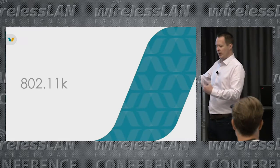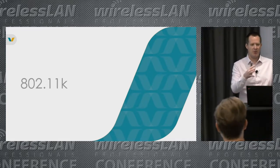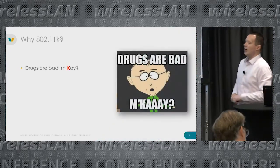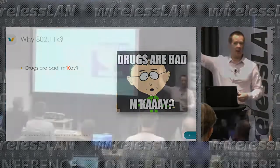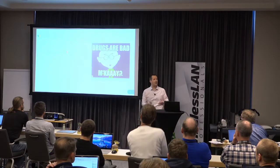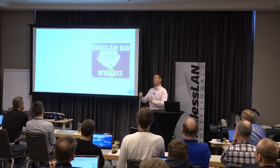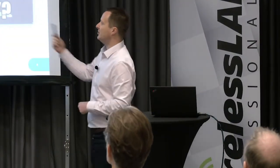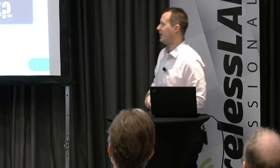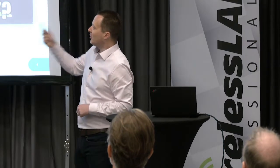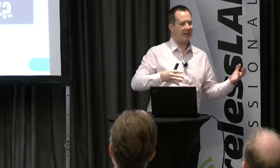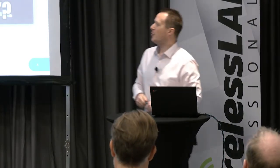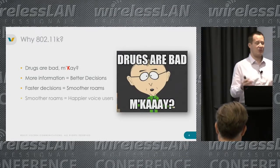My OCD makes me go alphabetical, so we're going to go k, r, v. For 802.11k — who here struggles to remember what k, r, and v do? I always struggled to remember which one meant which. I eventually got it to stick using Mr. Mackey from South Park, who always gives people information. So whenever I think 'what does 11k do?' I think of Mr. Mackey: to make better decisions, we need more information.